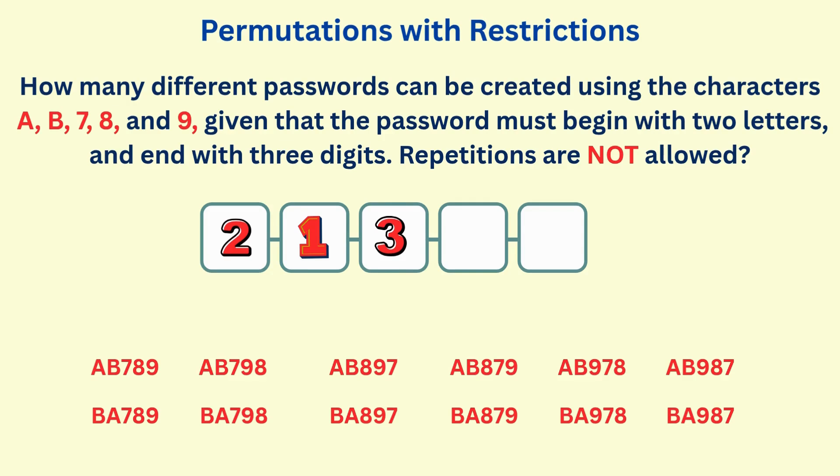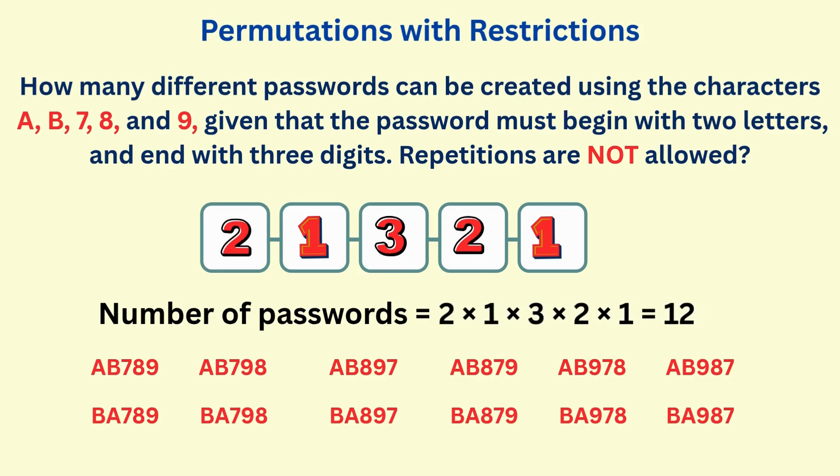Whichever digit is placed there, only two digits now remain, so we write 2. And then there is only one choice of digit left for the final slot, so we put 1 in the box. To get the total number of possible passwords, we multiply all the numbers in the box to get 12, so 12 possible passwords.